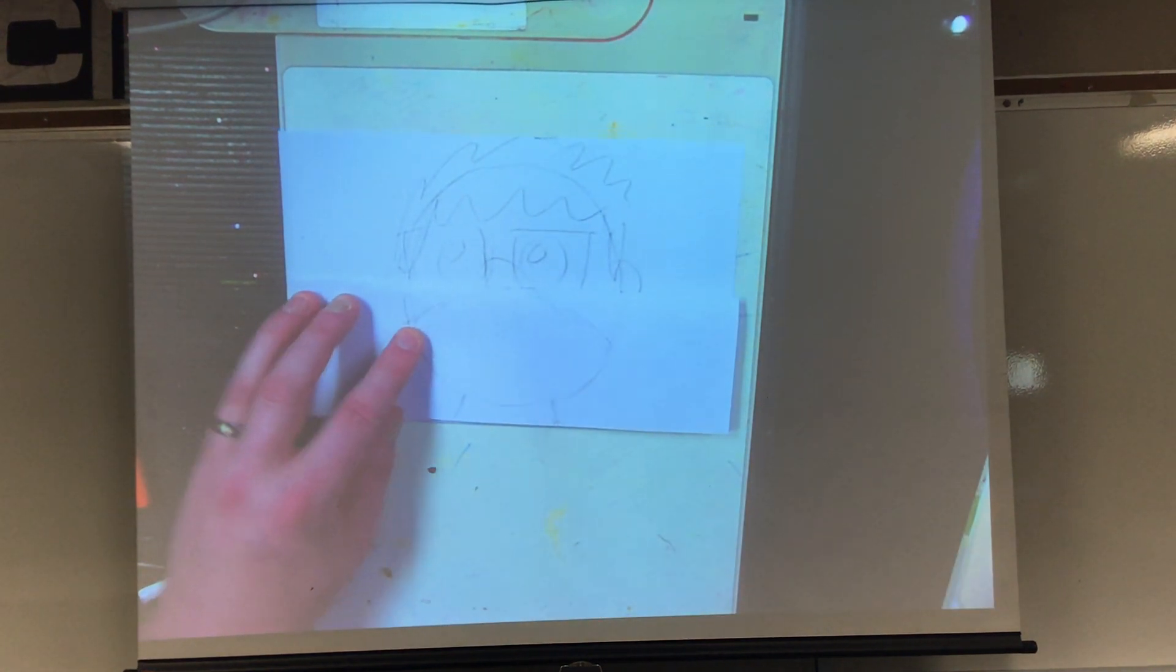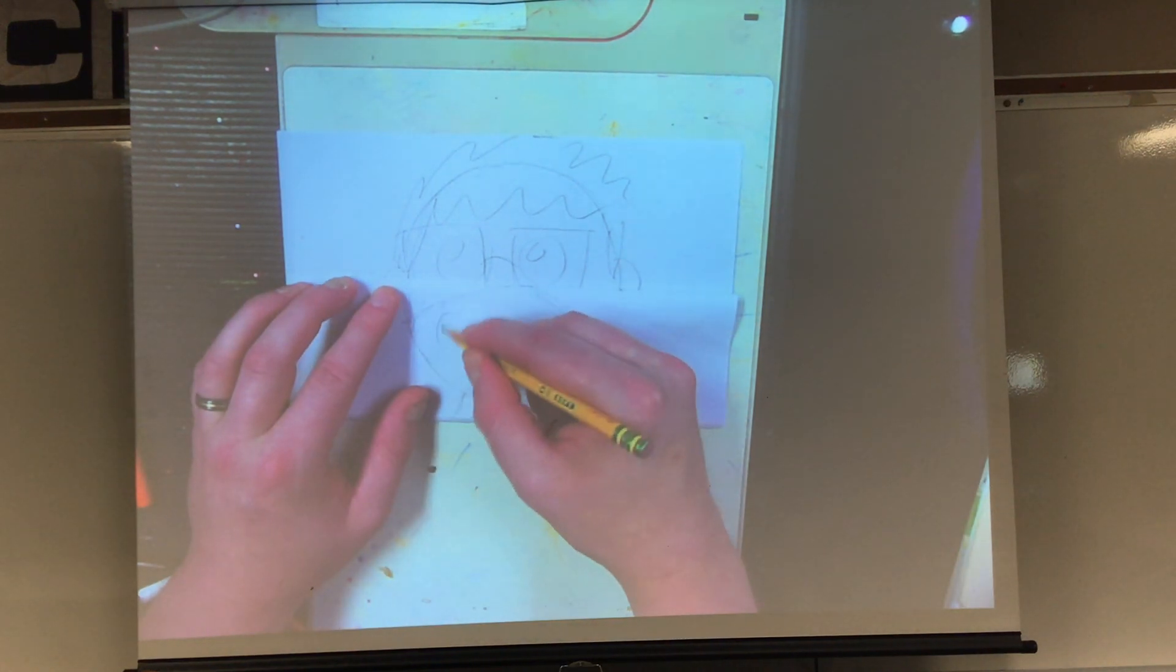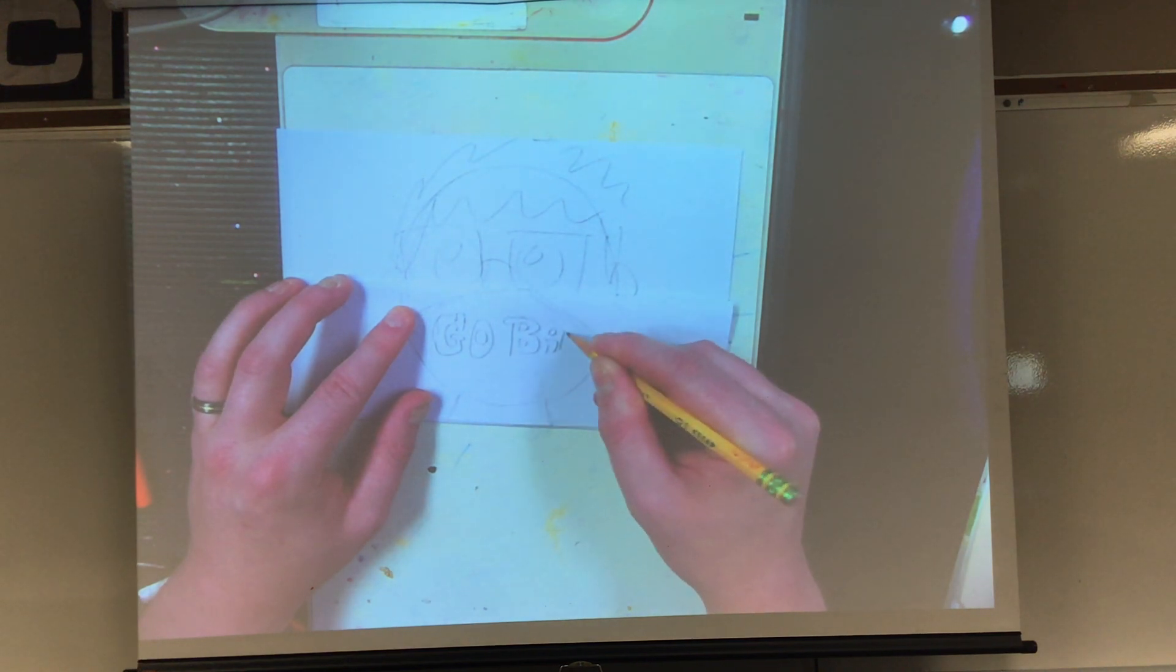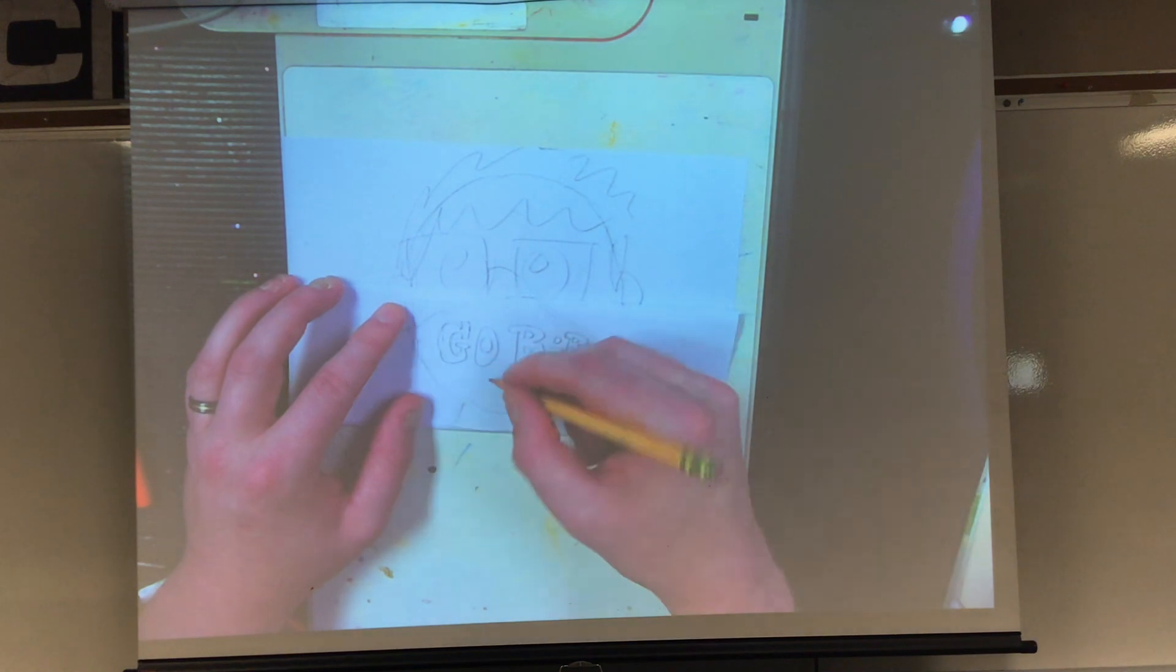It could be stripes, could be something you like. For me, I'm going to draw go birds because I'm ready for football. A tiny little S, go birds, and then maybe like an Eagles sign right there. You can draw whatever you want on your mask, maybe you have a special mask at home that you wear all the time.